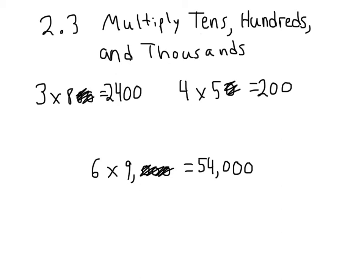And that's how that strategy works. We just pretend the zeros aren't there, solve the multiplication fact, and put the correct number of zeros onto the end of the answer. Let's look at a couple of problems from the book.